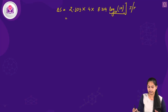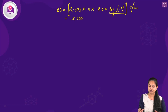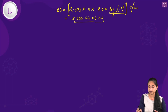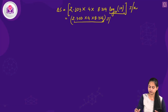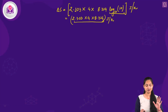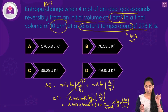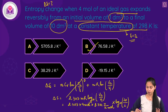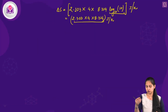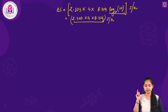Since log₁₀(10) = 1, the expression simplifies to 2.303 × 4 × 8.314. The unit of ΔS is joules per Kelvin. Multiplying gives ΔS = 76.58 J/K, so option B is the right answer.